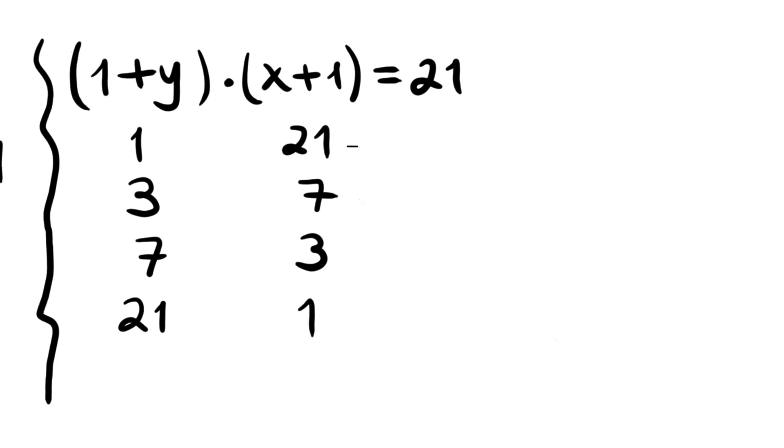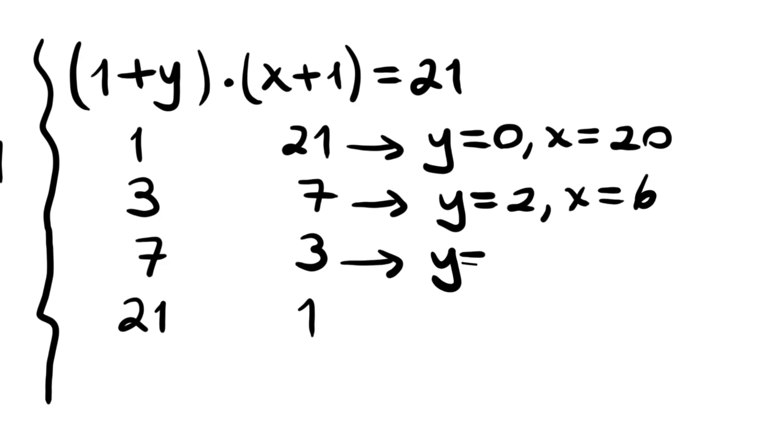From this first one we found Y is 0 and X is 20. The second one, Y is 2 and X is 6. Third one, Y is 6, X is 2. And the last one, Y is 20 and X is 0.